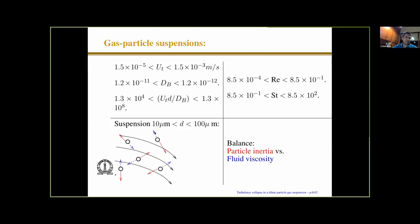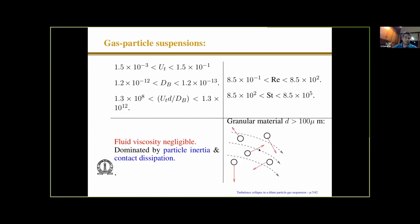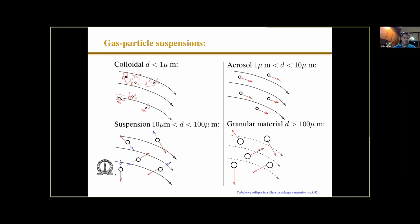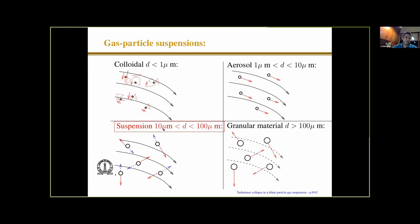Suspensions are in the 10 to 100 micron range. Brownian motion is not important here; the Reynolds number is still relatively small but the Stokes number is large, meaning particle inertia is large, and there is a balance between particle inertia and fluid viscosity. For particles greater than 100 microns, the fluid more or less does not matter; the system is dominated by particle inertia and contact dissipation due to inter-particle interactions. Most of my work has been on granular materials, but today I'll talk about suspensions — 10 to 100 microns — in particle-gas suspensions, where the fluid is turbulent.